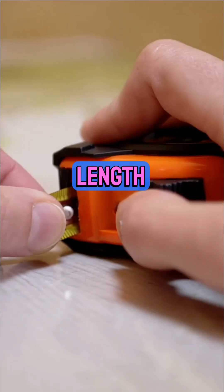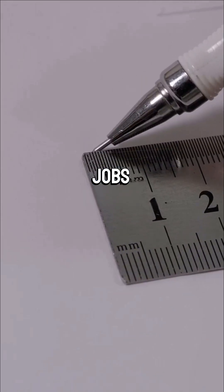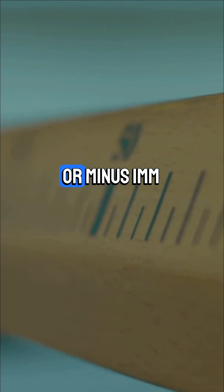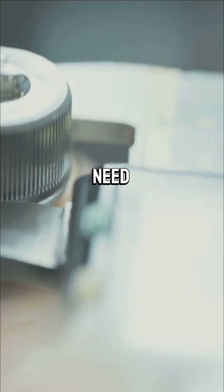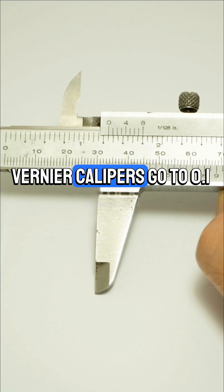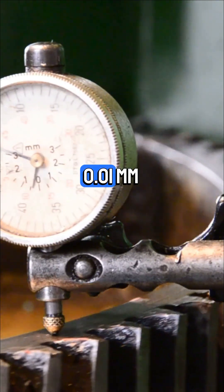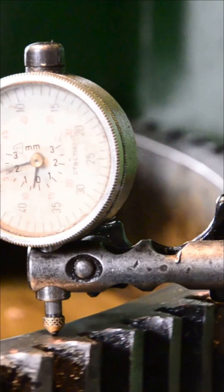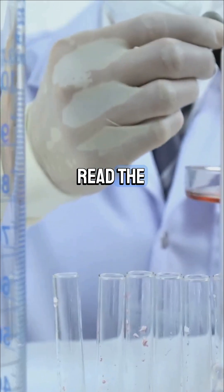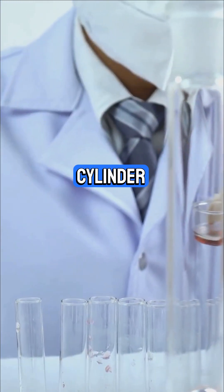First up, measuring length. Grab a ruler for quick jobs - its accuracy is about plus or minus 1mm. Need more precision? Vernier calipers go to 0.1mm, and a micrometer screw gauge nails it at 0.01mm. For liquids, always read the bottom of the meniscus in a measuring cylinder.